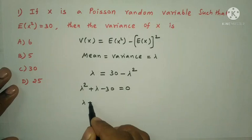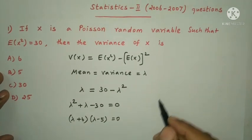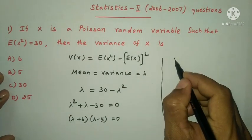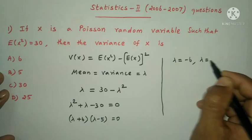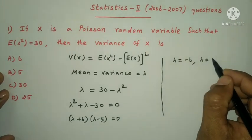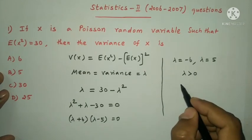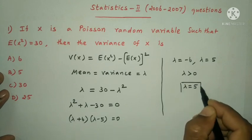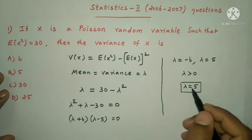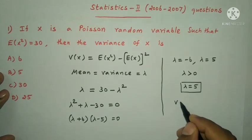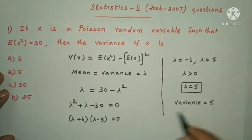Factoring: lambda squared plus 6·lambda minus 5·lambda minus 30 = 0. So lambda equals -6 or lambda equals 5. Since in Poisson distribution lambda must be greater than zero, therefore lambda equals 5. The variance answer is 5, option B.